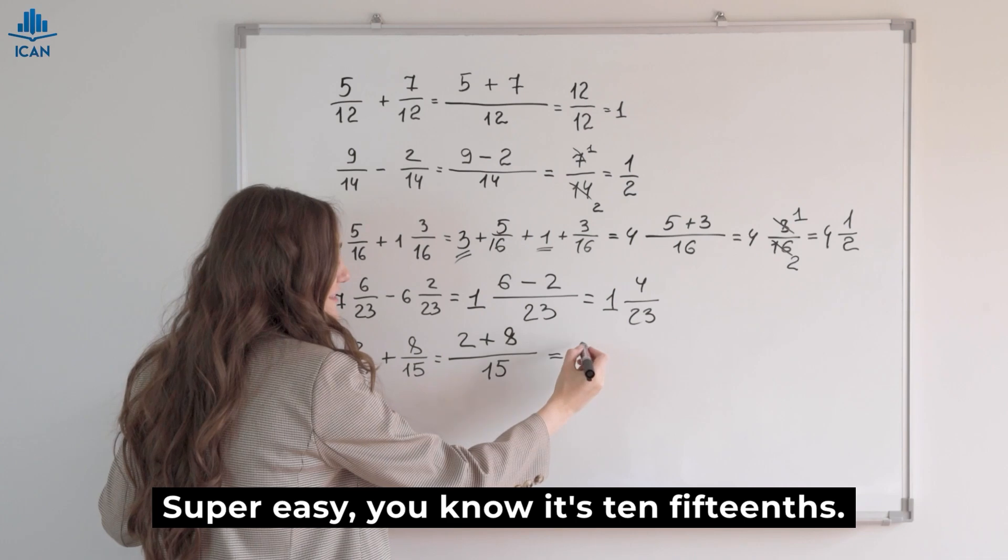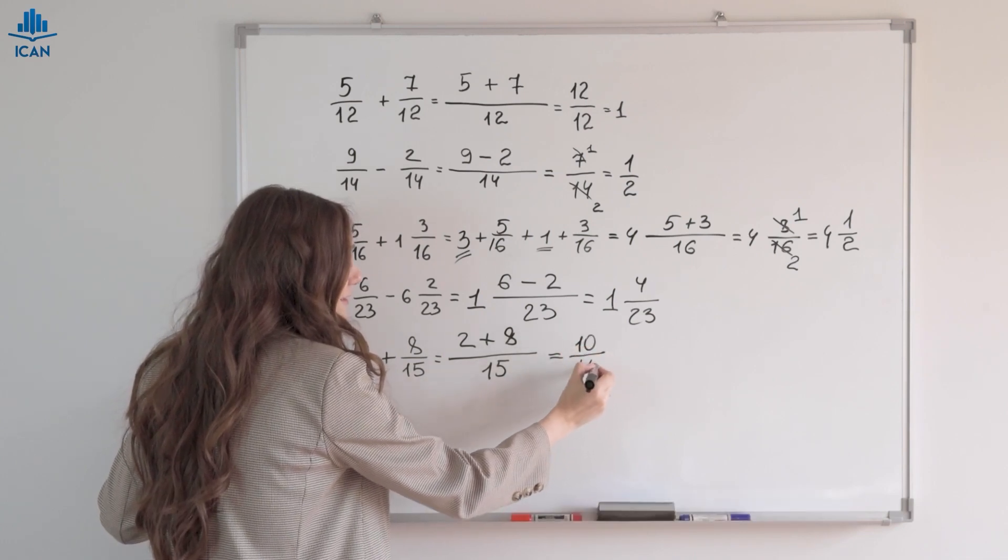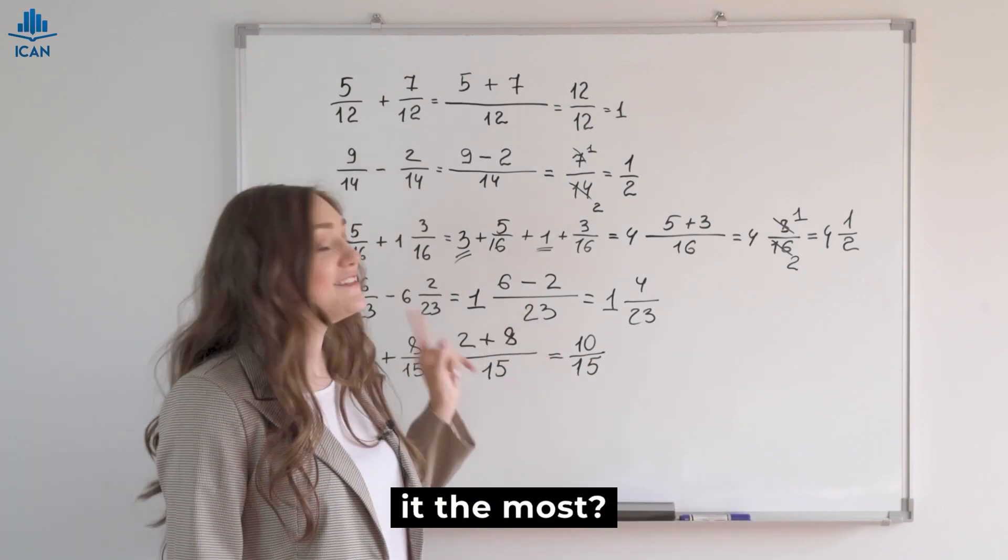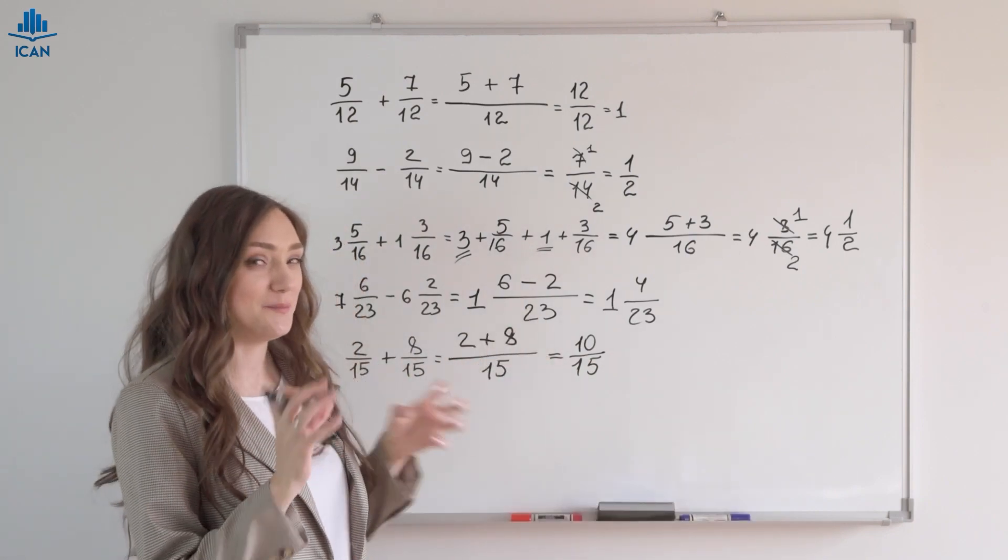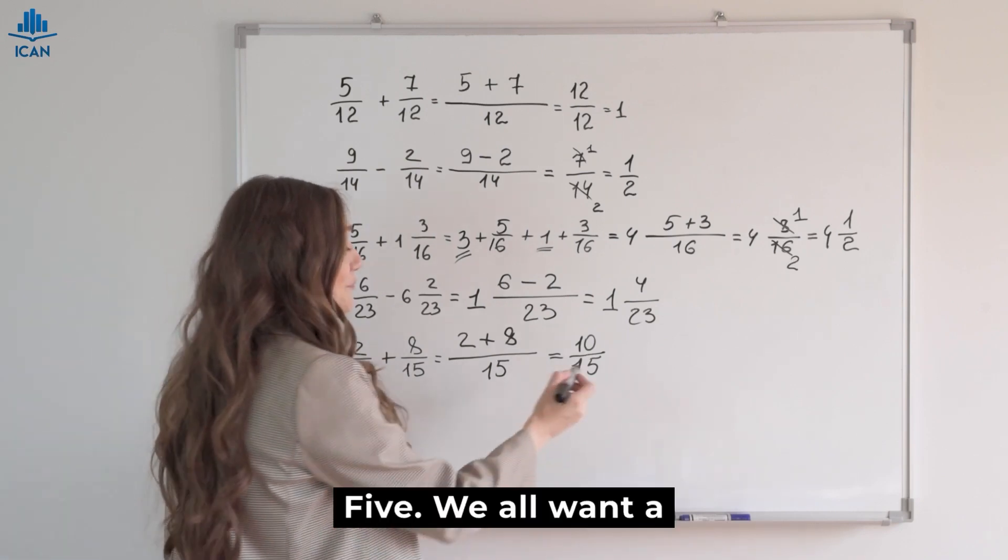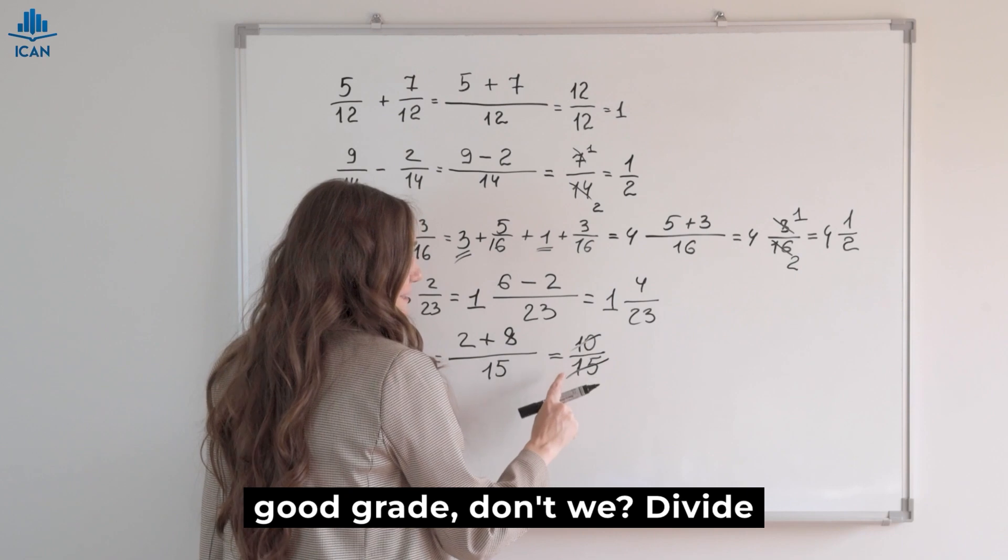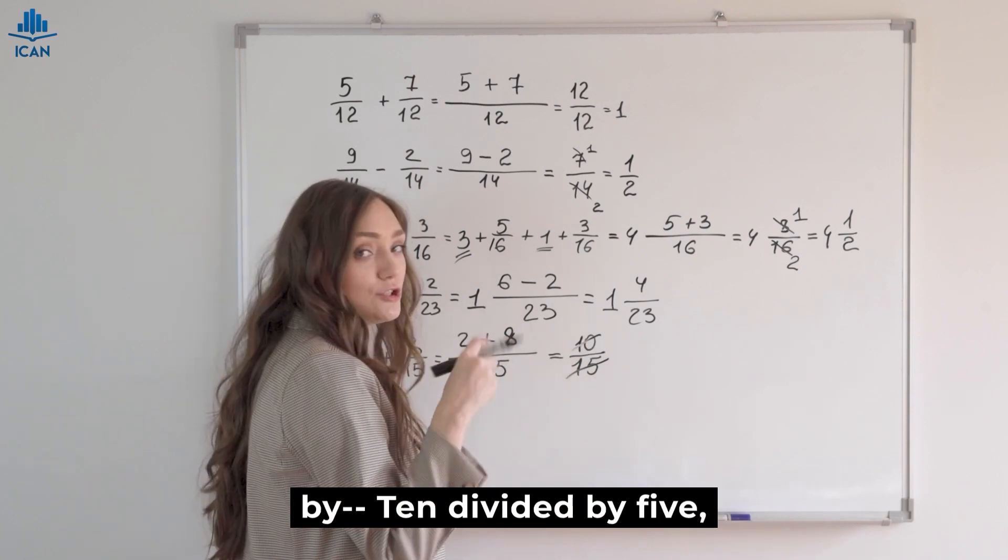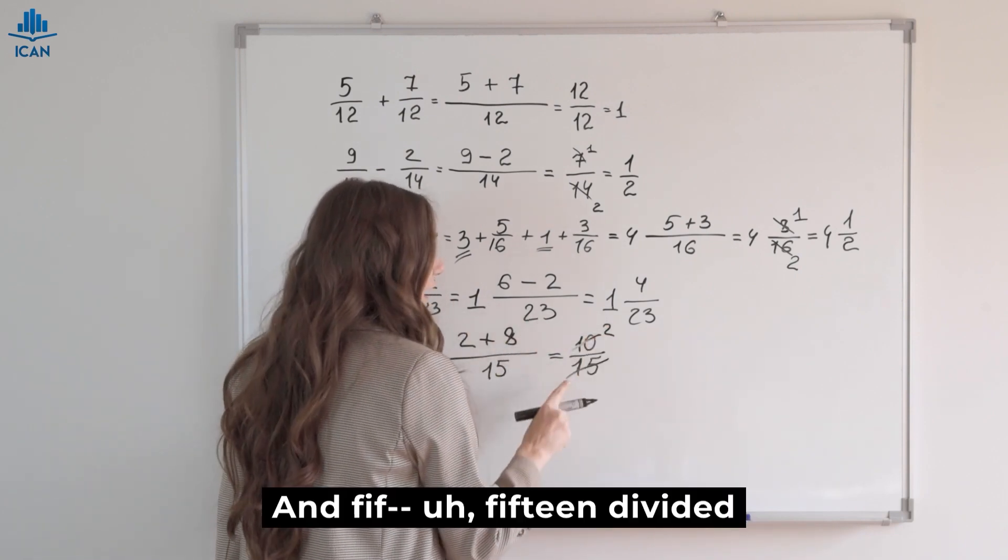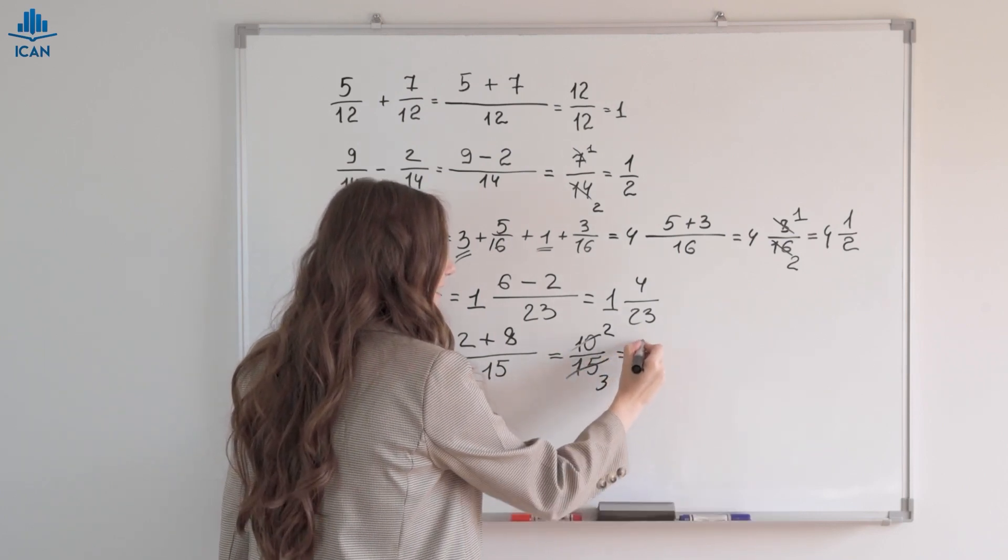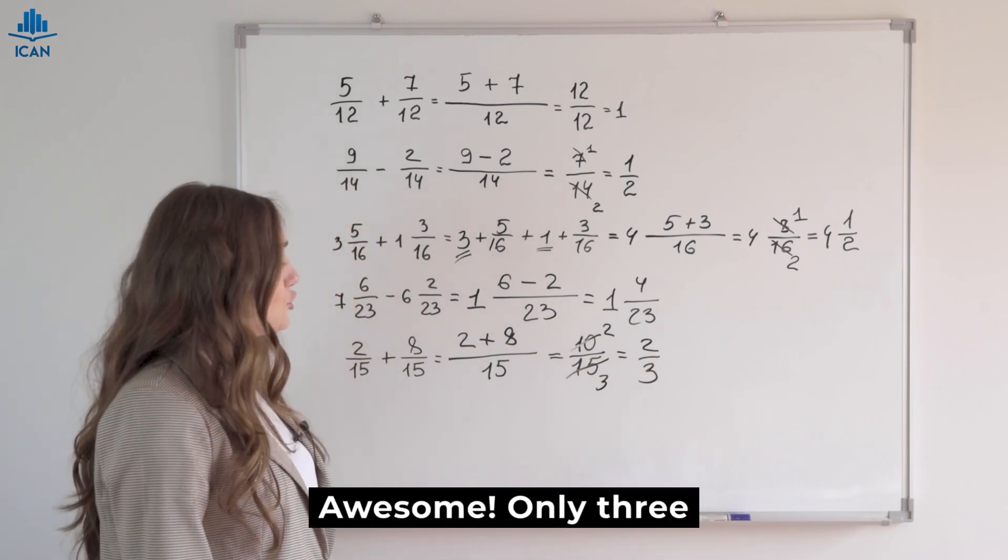2 plus eight. Super easy. You know it's ten-fifteenths. What number divides both ten and fifteen to simplify it the most? 5. We all want a good grade, don't we? Divide by ten divided by five. What's that? 2. And fifteen divided by five. What's that? Three. Two-thirds. Awesome.